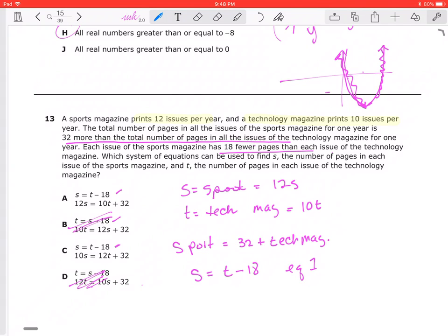Okay, now we need to talk about our second equation. So this is equation one. The difference between here is we have 10S and 12S. So 12S means 12 sports magazines equals, let's look up here. We have the number of pages in all of the sports magazines for one year is 32 more than the total number of pages in all the issues of the technology magazine. So that would be 12S equals 10T plus 32, which is our answer choice A.